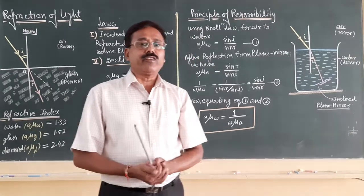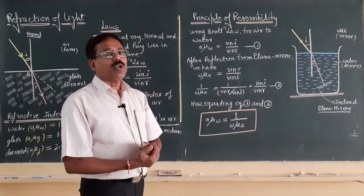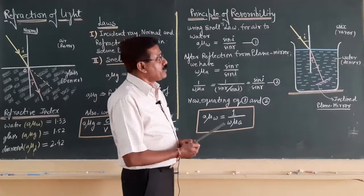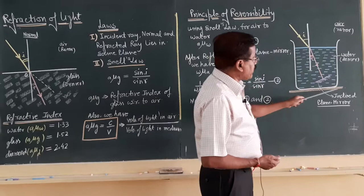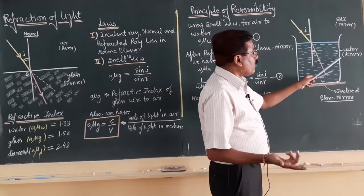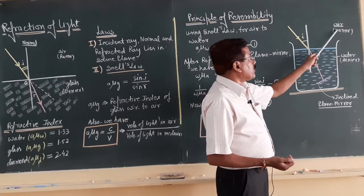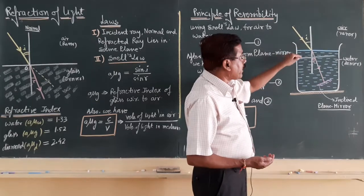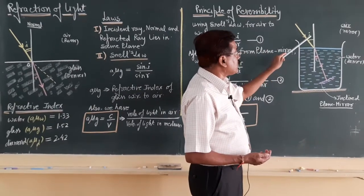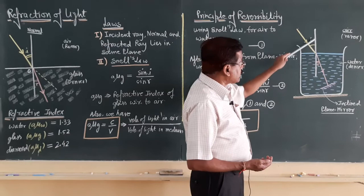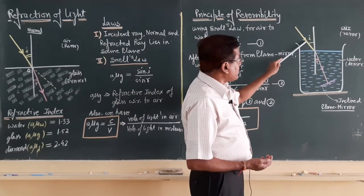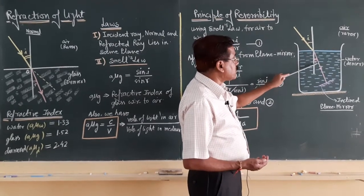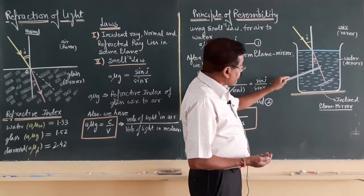Now we are going to discuss a very important phenomenon: the principle of reversibility, which is related to the refractive index. In this activity, we have a beaker filled with water, which is a denser medium with respect to air. On the free surface between air and water, this is the incident ray, this is the angle of incidence, and this line is the normal. When light travels from a rarer to a denser medium, it bends towards the normal, and R is the angle of refraction.